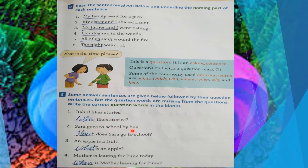Next: 'Sarah goes to school by bus.' — 'How does Sarah go to school?' Sarah goes to school by bus. Next: 'An apple is a fruit.' — 'What is an apple?' Apple is a fruit. Next: 'Mother is leaving for Pune today.' — 'When is mother leaving for Pune?' She is leaving today.